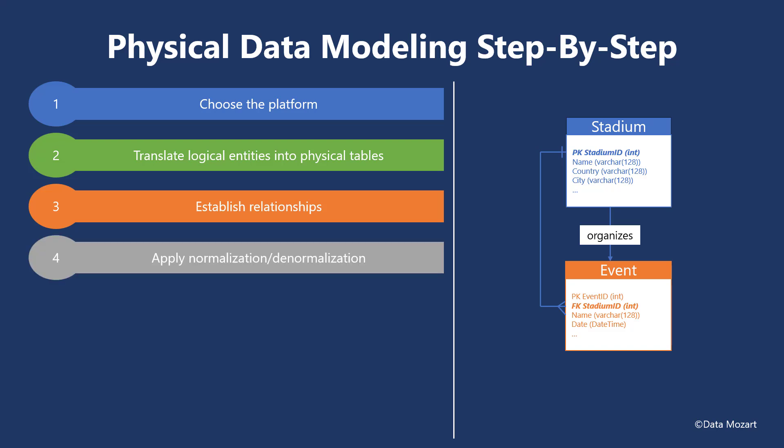Apply normalization or denormalization. Similar to what we've already examined in the logical data modeling phase, check and confirm the tables are — depending on whether you are designing a transactional or analytical system — normalized or denormalized to a degree that ensures the most efficient workflow. In OLTP systems, tables should be normalized to a third normal form to reduce data redundancy and efficiently support write operations such as insert or update. While in OLAP systems, data may be denormalized to eliminate the number of joins and make read operations more performant.